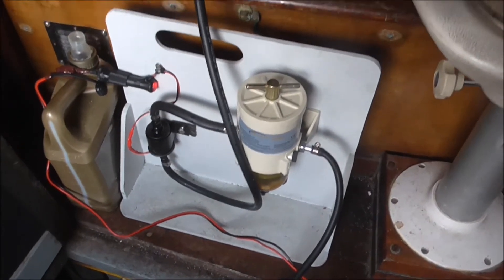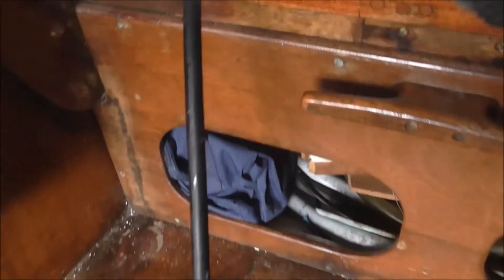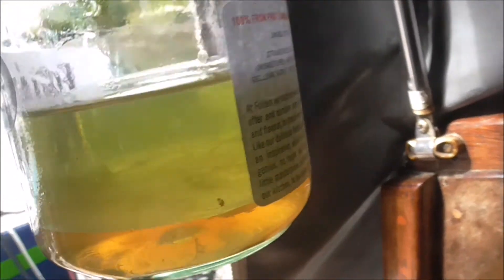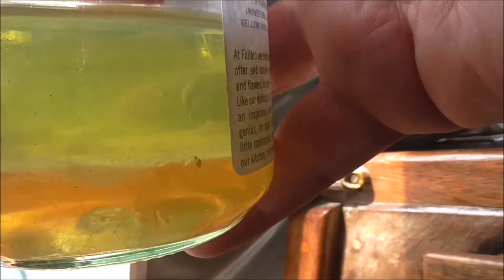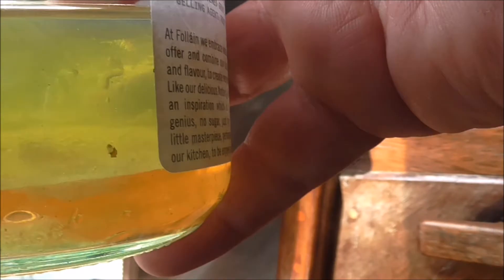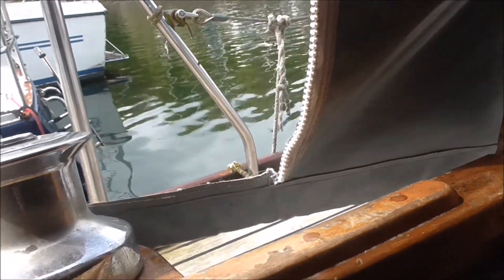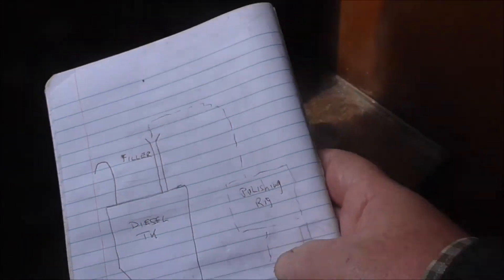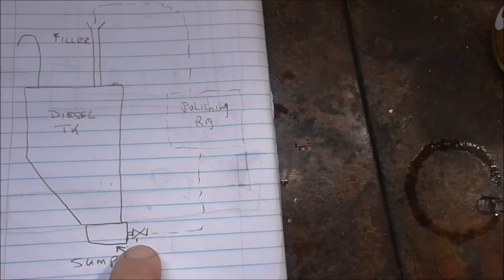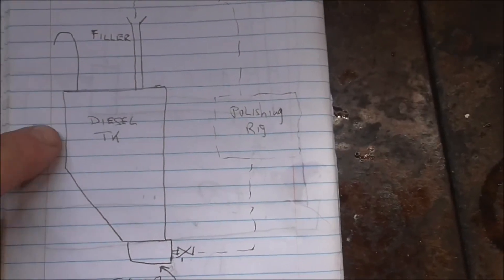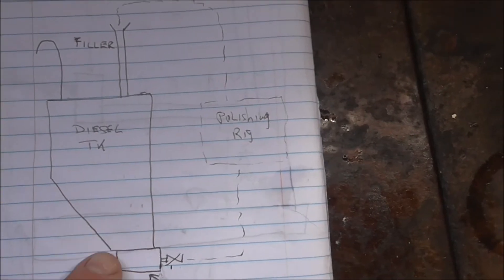OK, I've moved over now to the port tank and we're just circulating that one now. This is what I got out of the bowl from the starboard tank, and that's not too bad really. A little bit of crud, but there again I'm very lucky with our tanks. There's a sump on the bottom of the tank with a drain valve, so twice a year I take a sample out.